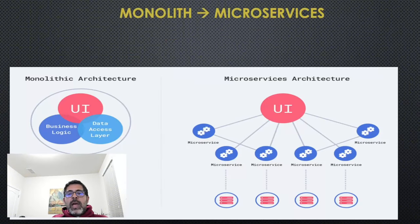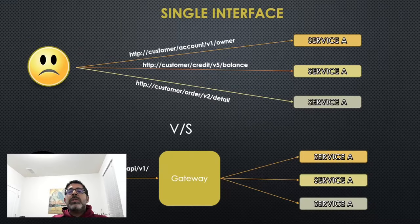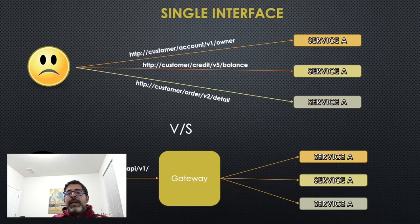The second use case is when you have begun to break your monolith into a set of microservices — you don't need to keep adding new URIs. The gateway allows you to do dynamic routing, which makes breaking a monolith to services a breeze. The third and most important use case is that it helps you create a single interface for all your different services.